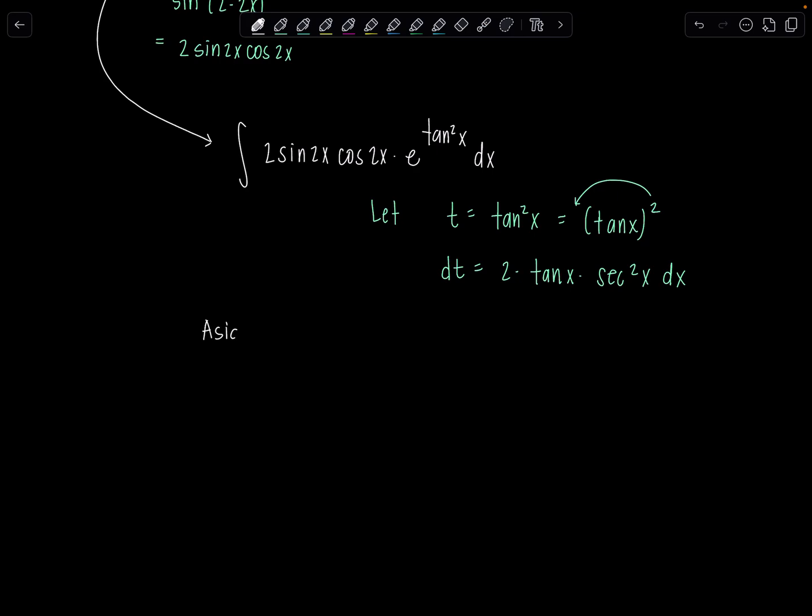So remember, tan squared x is tangent of x squared. So when we find dt, we have to use power rule and chain rule. This is going to be 2 times tan x times secant squared x dx. And so this kind of leads me to try to come up with double angles that only involve maybe tan squared or tangents instead of the normal ones that we use. So let's play with that right now. So a little aside moment in case you're not familiar with them.